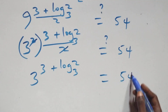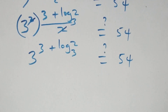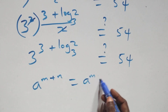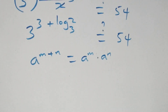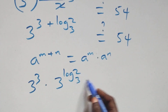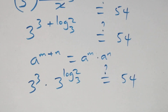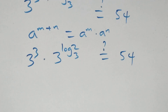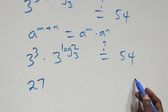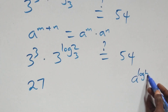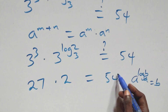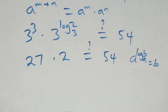We check if this equals 54. Here we apply the law of indices: when we have a raised to power (n plus m), this is the same as a raised to power n times a raised to power m. So we have 3 raised to power 3 times 3 raised to power log 2 base 3, which equals 54. Now 3 cubed is 27, and by the identity a raised to power log b base a equals b, we get 3 raised to power log 2 base 3 equals 2. So 27 times 2 gives us 54.